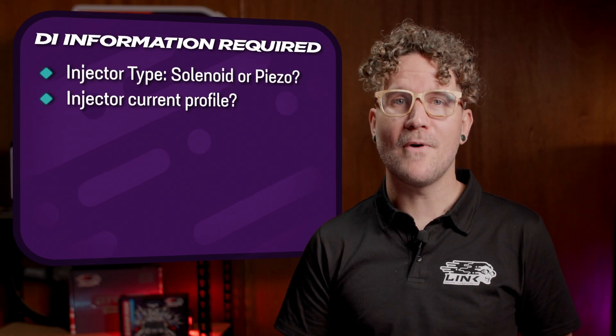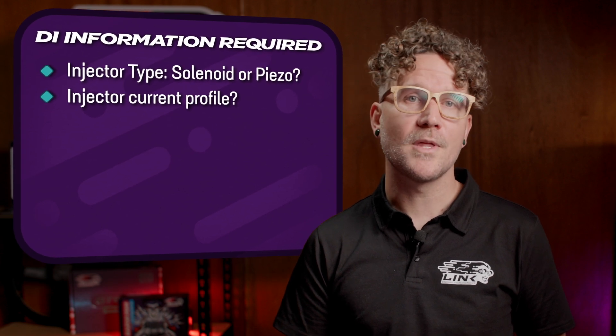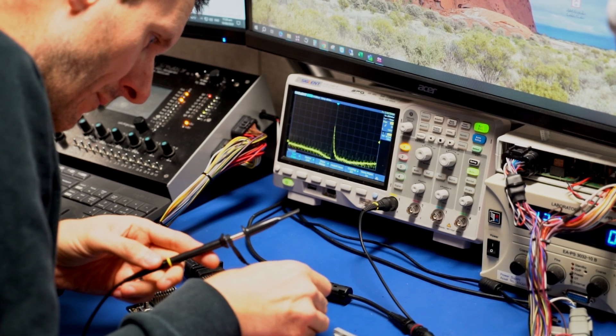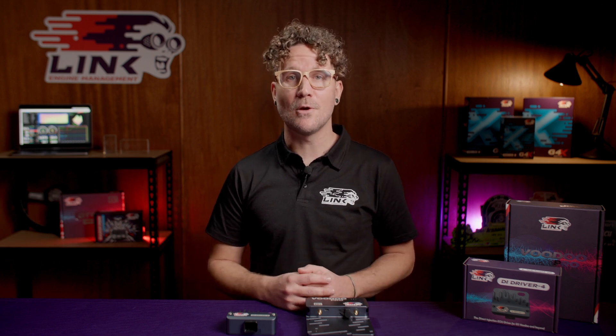To find an injector current profile, you will need to do some reverse engineering using an oscilloscope with a current probe. You'll need to capture and analyze the waveform generated by the injector to establish the peak current, hold current, and response times. This is done by disconnecting the injector harness and connecting the oscilloscope in series with the injector. You'll then need to configure the oscilloscope to capture the entire current waveform. Finally, turn the engine on to activate the injector and capture the current waveform.